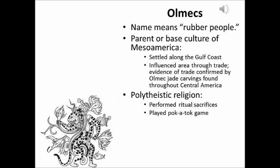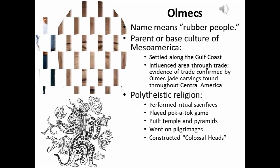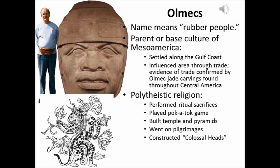The Olmecs also played a game called Pocatoc, which was very similar to basketball. A big ring is put up and you can kick and throw the ball around and try to get it through the hoop. It often involves sacrifice as well, especially when the Aztecs take it up. They built temples and pyramids, and they went on pilgrimage to religious sites and shrines. They're also famous for creating what we call the colossal heads — the large heads of their rulers. As you can see, these are huge.